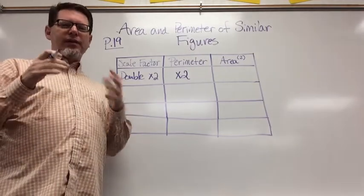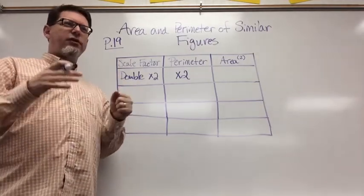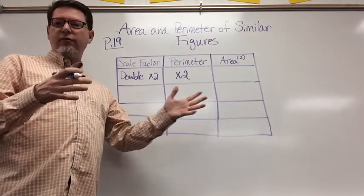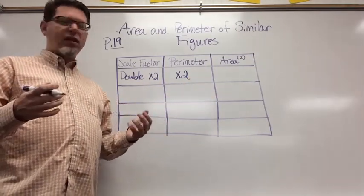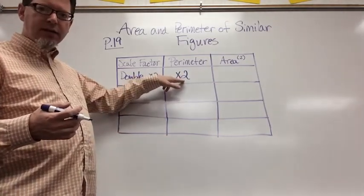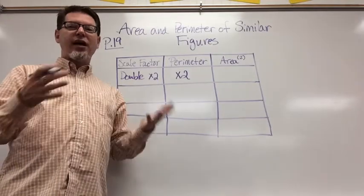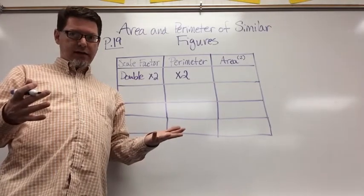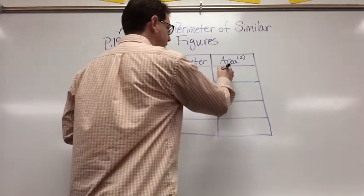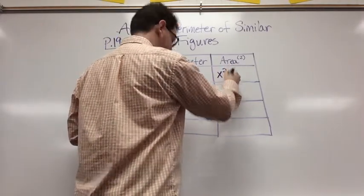But let's think about the area. When we think about area that's length times width of rectangular shapes, so I'm not just doubling the area but I'm actually squaring it. So instead of just times 2 it's times 2 squared.